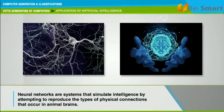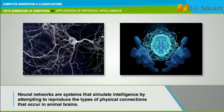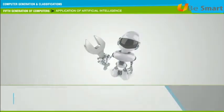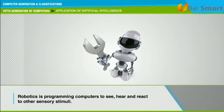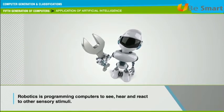Neural networks are systems that simulate intelligence by attempting to reproduce the types of physical connections that occur in animal brains. Robotics is programming computers to see, hear, and react to other sensory stimuli.